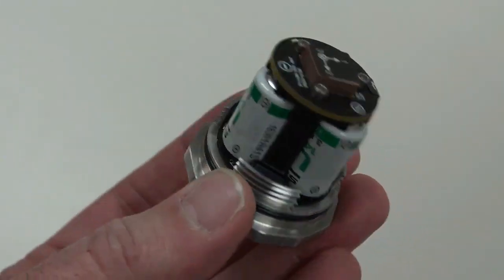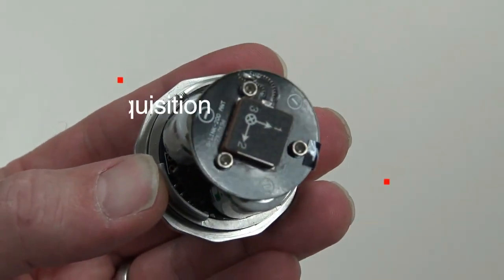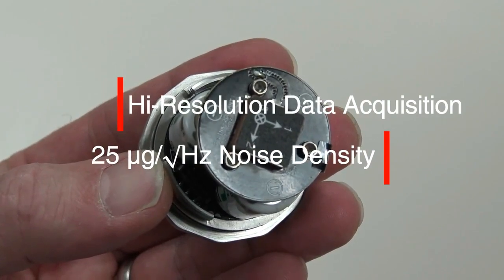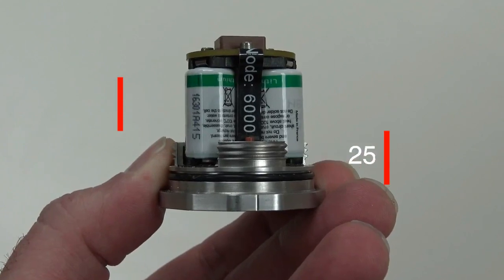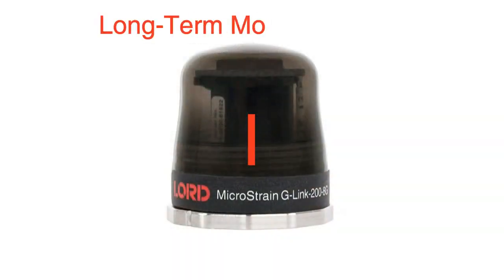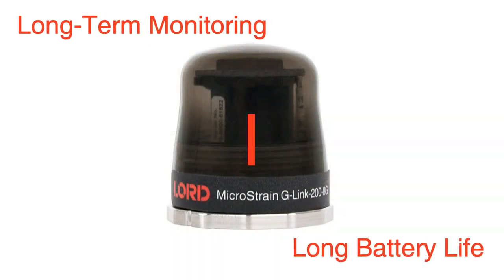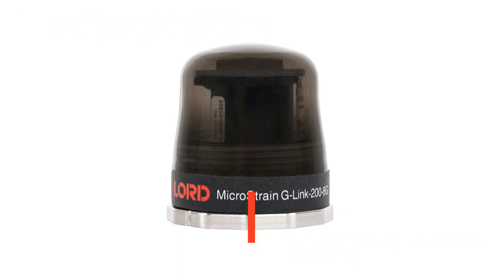With its onboard tri-axial high-performance accelerometer, the G-Link 200 provides high-resolution data acquisition with an extremely low noise density of 25 micro-g per root hertz and very low drift. And its derived vibration parameters mean you get long-term monitoring with long battery life.